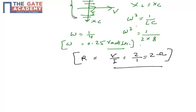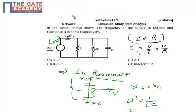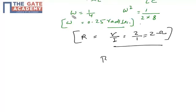So the resistance equals 2 Ohms and the supply frequency is 0.25 radians per second. Therefore, the correct answer is option B. Thank you.